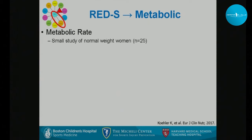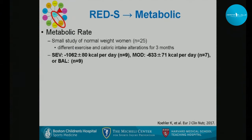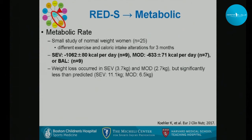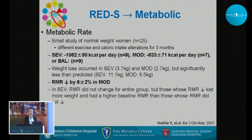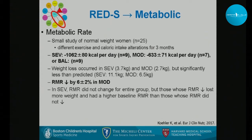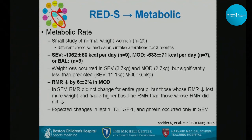Regarding metabolic rate: a small study of normal-weight women with different caloric intake alterations over three months showed those severely energy deficient (down ~1,000 kcal) and moderately deficient (down ~600 kcal) lost weight, but significantly less than predicted. Resting metabolic rate went down about 6% in the moderately restricted group. Those with a higher baseline resting metabolic rate had more severe reduction. The energy deficit and adaptive changes in resting metabolic rate explained 54% of their weight loss.